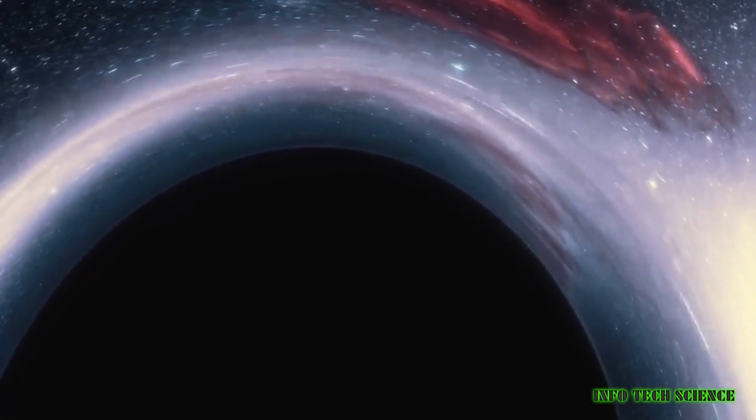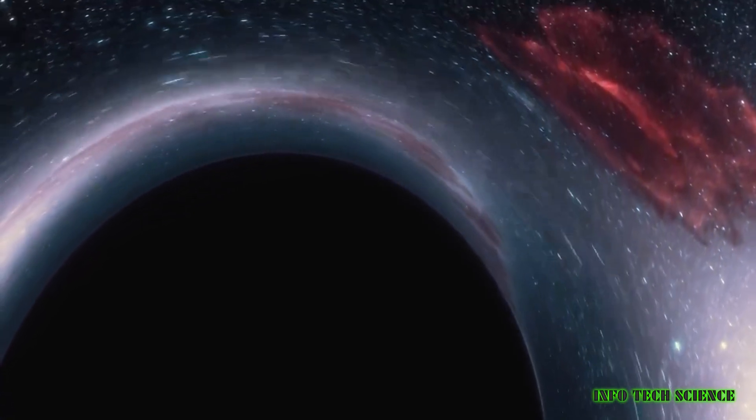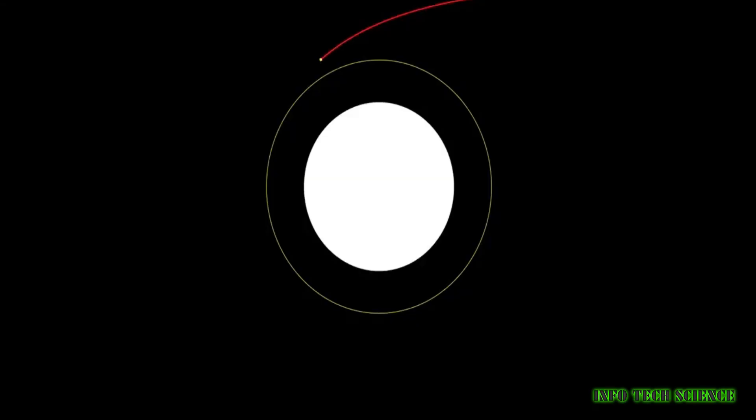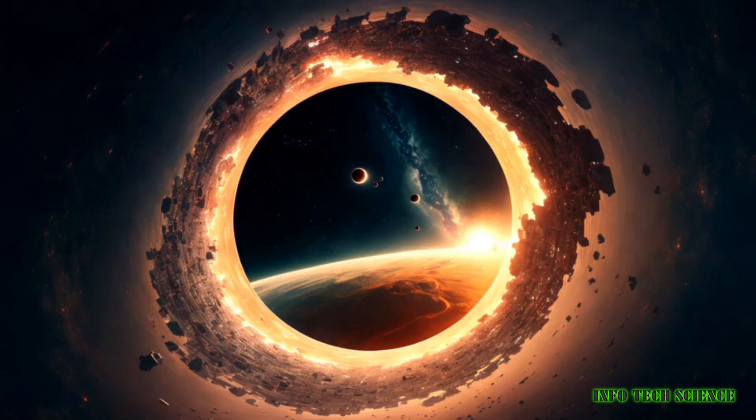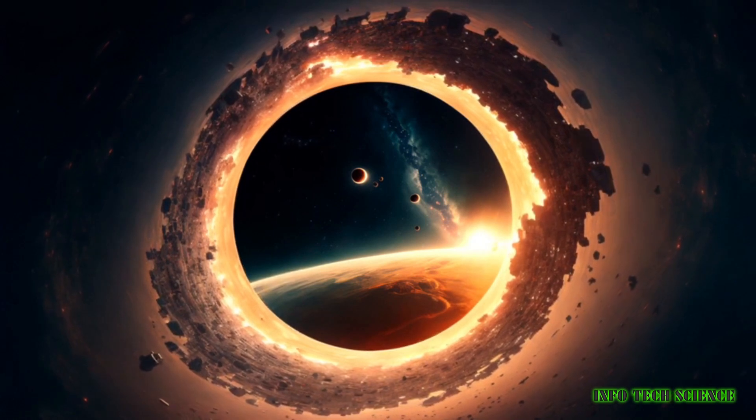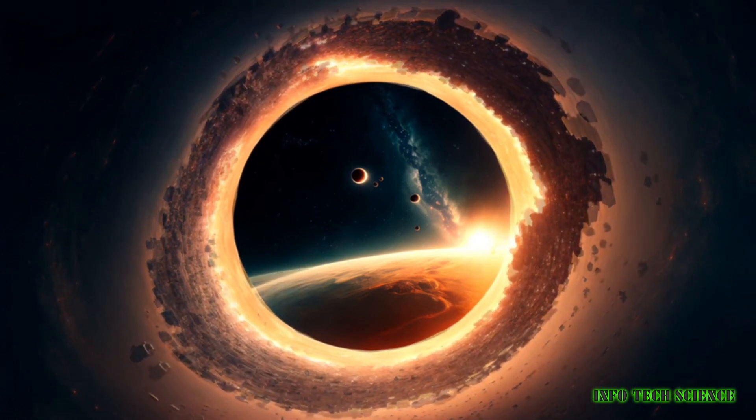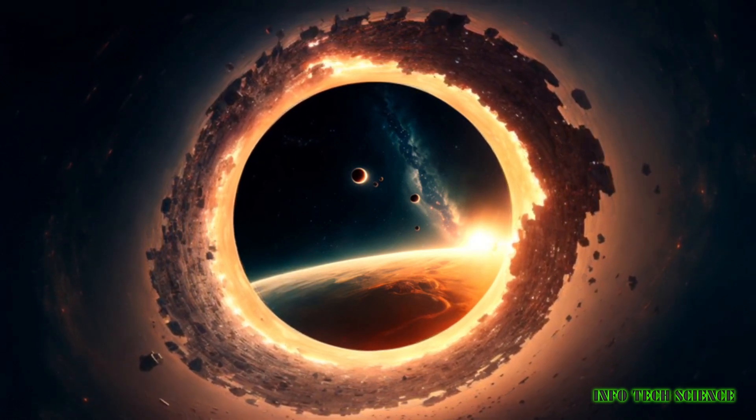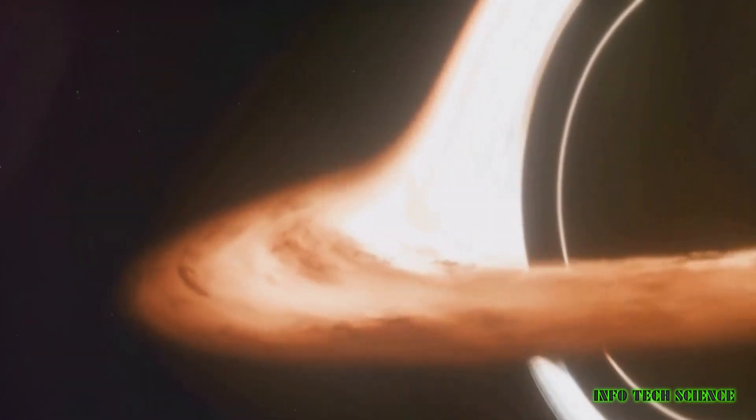The event horizon of a black hole is a boundary beyond which nothing, not even light, the fastest entity in the universe can escape its gravitational clutches. In 1974, the renowned theoretical physicist Stephen Hawking proposed a mechanism of black hole evaporation via black body radiation, now known as Hawking radiation.